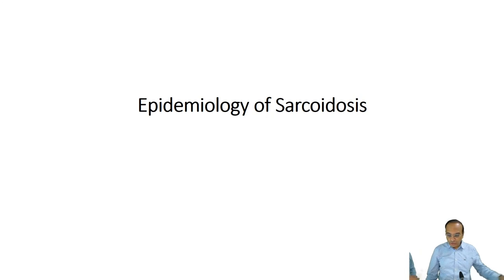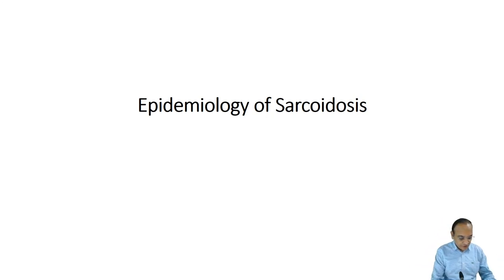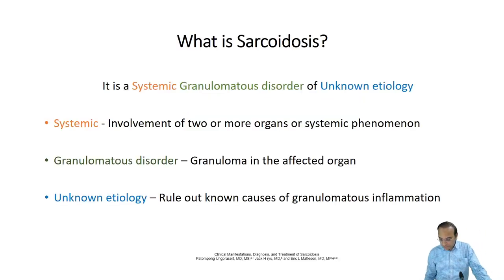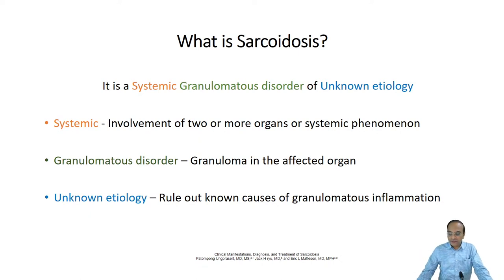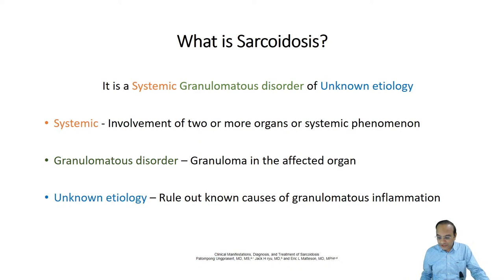Thank you. We'll start off with the burden of disease and epidemiology of sarcoidosis. As already discussed, it is a systemic granulomatous disorder of largely unknown etiology. Systemic means involving at least two or more organs. Granuloma in the affected organ has to be demonstrated as part of the diagnostic criteria, and most of the time other causes of granulomatous inflammation have to be ruled out. It is a diagnosis of exclusion in several ways.